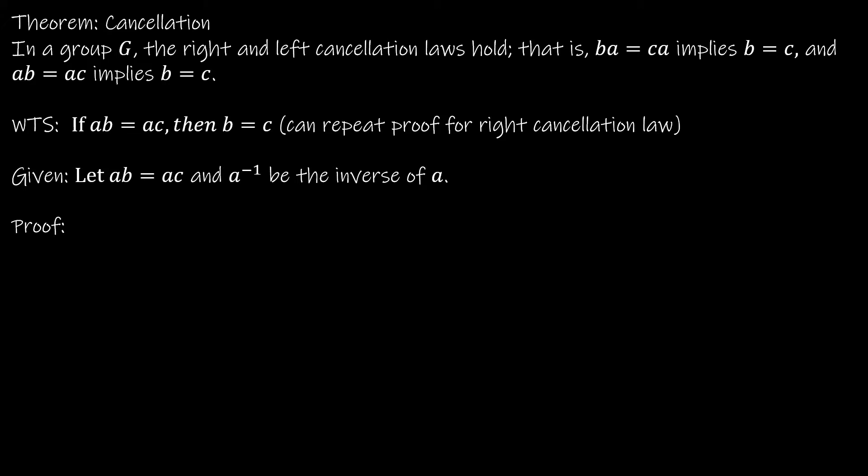The first property we're going to look at is the theorem of cancellation. There are two theorems of cancellation, one on the right and one on the left. We're going to prove the one on the left, and then you could repeat the same process for the one on the right. The theorem says in a group G, the right and left cancellation laws hold. The cancellation law essentially says that if BA equals CA, that implies B equals C, and if AB equals AC, that also implies B equals C. We're going to cancel these A's out to show that B is equal to C.